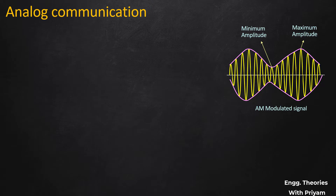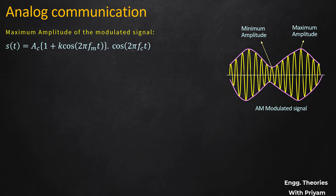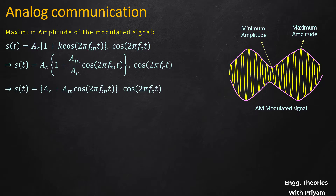From the figure of the modulated signal we have seen that the amplitude becomes maximum and minimum periodically according to the message signal. From Equation 1, substituting k = Am/Ac and multiplying Ac into the bracket, s(t) becomes [Ac + Am·cos(2π·fm·t)]·cos(2π·fc·t). This is Equation 3.